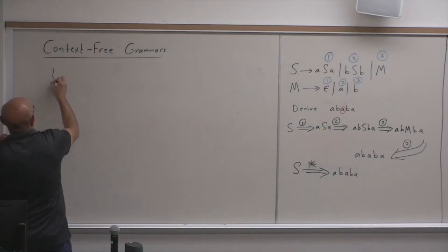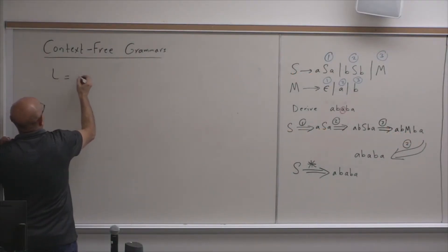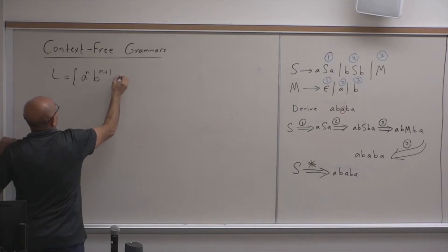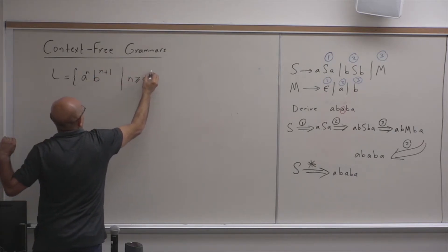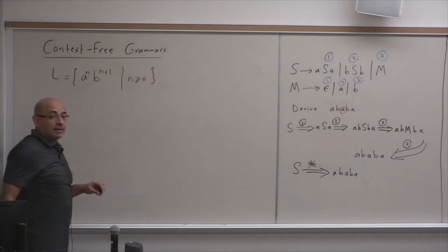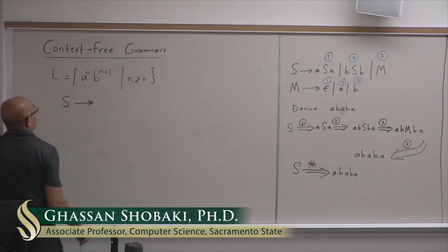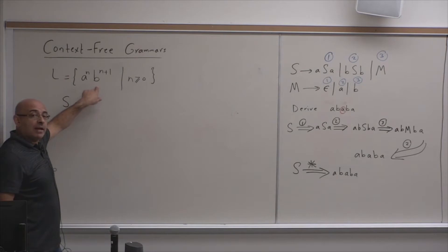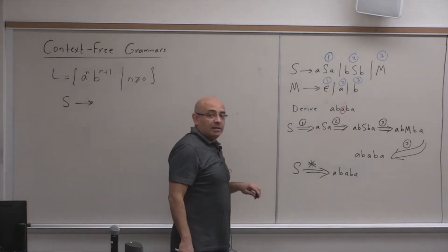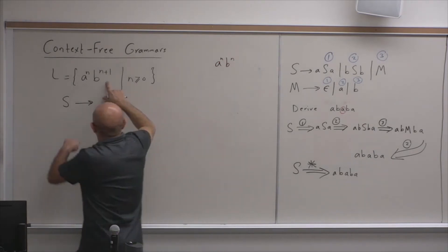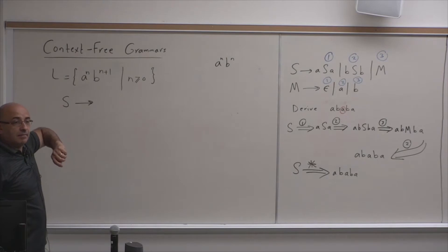How about this language: a^n b^(n+1) such that n is greater than or equal to 0. Now how can we write a grammar for this language? This is different from the language a^n b^n. The difference is that we have an extra b. So how can we write a grammar for this?